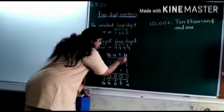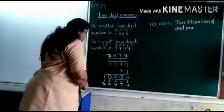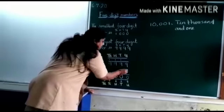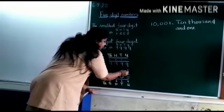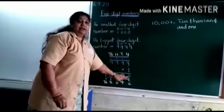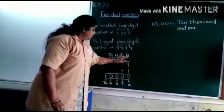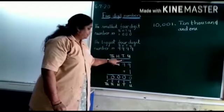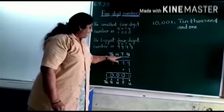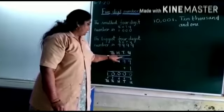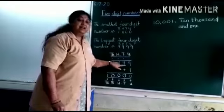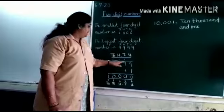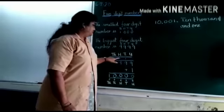Now see the number in the unit space. The number in the unit space is nine and one. When I add nine with one I get the number ten. So I write zero in the unit space and carry one in the tenth space. Then I add the number in the tenth space — one plus nine I get ten. Again I write zero in the tenth space and carry one in the hundred space.